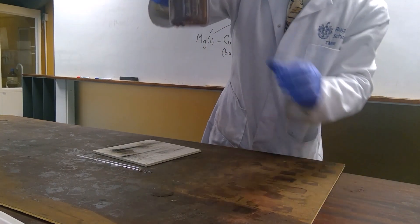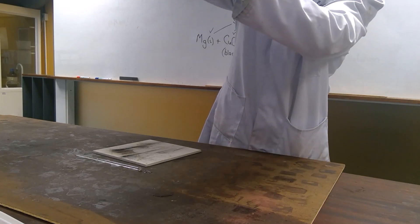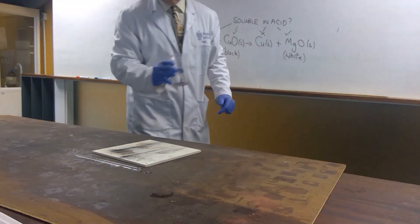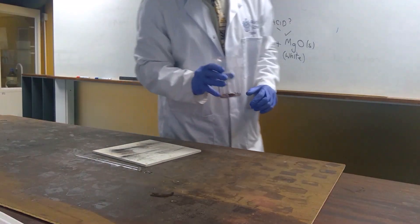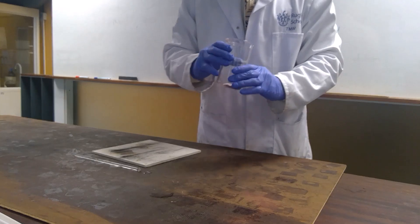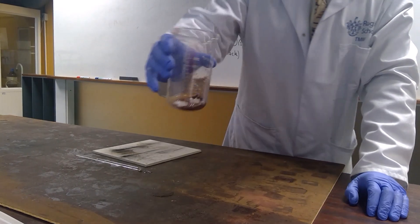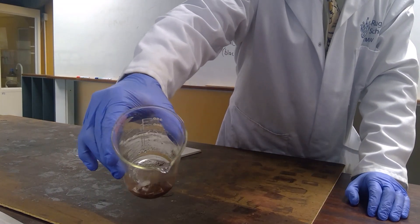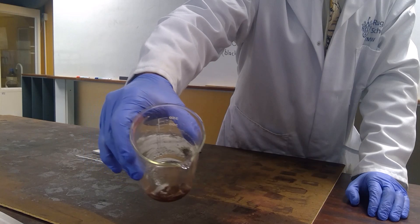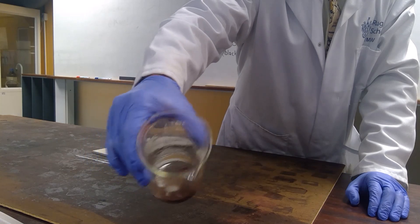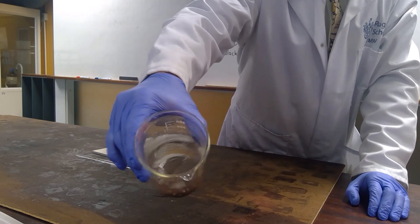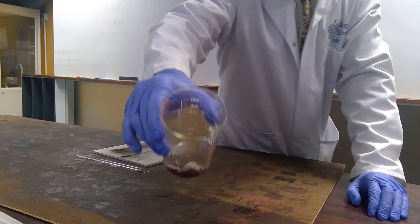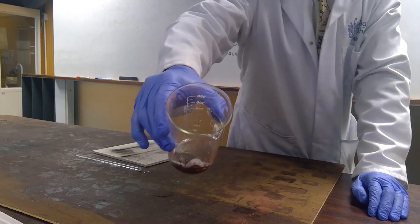That may become more clear as it settles. There are distinct signs of the reddish-brown colour of copper that is present in the crucible parts.